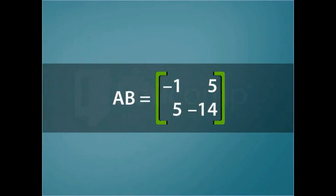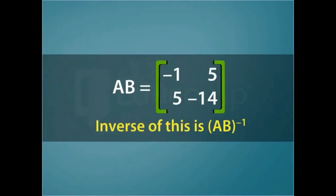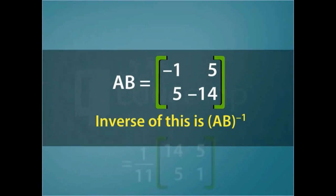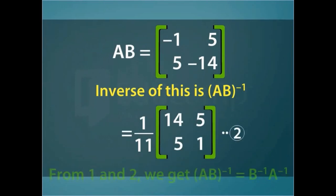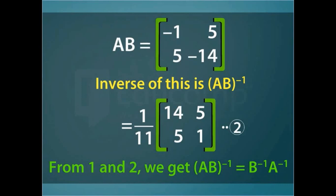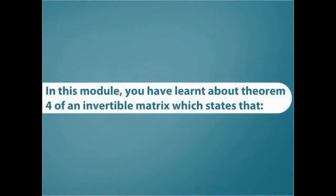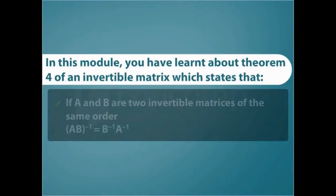From statements 1 and 2, we get AB whole inverse equals the product of B inverse and A inverse, given by the scalar 1 by 11 times the matrix with elements 14, 5, 5, and 1. In this module, you have learned about Theorem 4 of an invertible matrix, which states that if A and B are two invertible matrices of the same order, then AB whole inverse equals B inverse times A inverse.